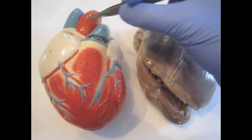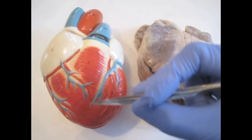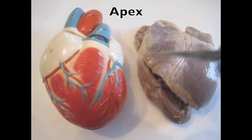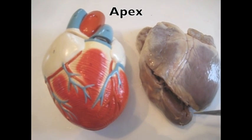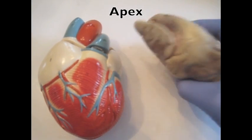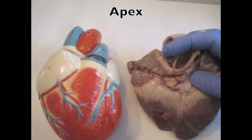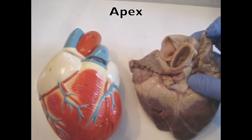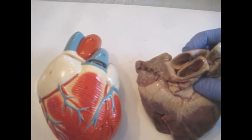The aorta and the pulmonary trunk, shown here, extend off of the base, or the superior side of the heart. The apex, or the point, extends down from the inferior portion of the heart. So determining the top and the bottom is relatively straightforward. On the sheep's heart, you can see the pulmonary trunk and the aorta. The aorta has a thicker wall than the pulmonary trunk.